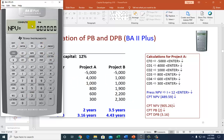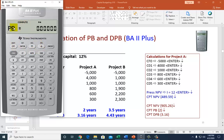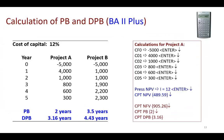Scroll down and compute the NPV anyway, even though that's not our main goal right now. Scroll down again past the NFV prompt — hit compute to bypass it. Scroll down once more to Payback, hit compute, and you get 2 years. Scroll down again to Discounted Payback, hit compute, and you get 3.16 years. That's all there is to it.